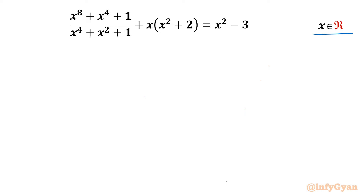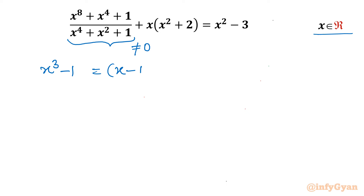Let's get started by writing the domain of the equation. As you can see, the denominator has even powers, so this value cannot be 0 for real solutions. Now I will write one algebraic identity — it is the x³ - 1 formula. So we can write x³ - 1 = (x - 1)(x² + x + 1).